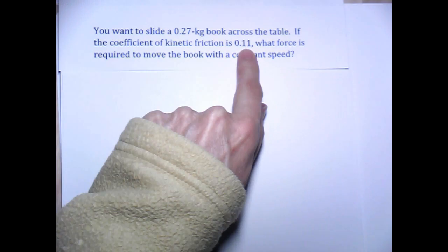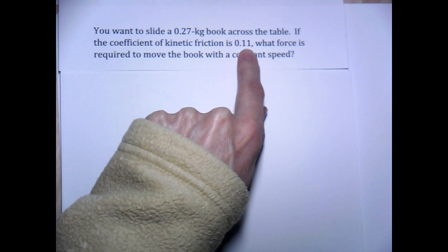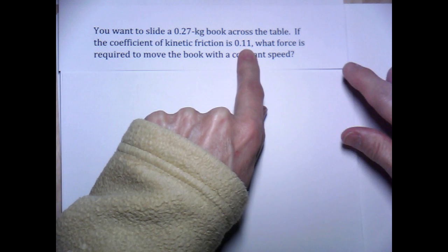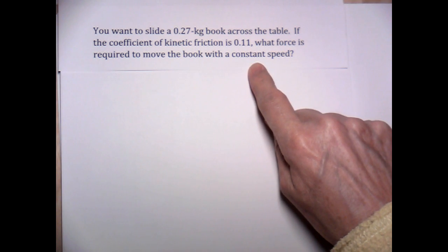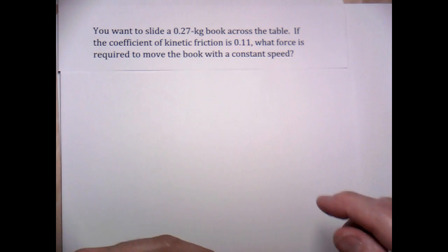Now, there's no units on a coefficient of friction because it's a ratio and the units cancel out. So the first thing we need to do is realize or recognize that constant speed in this problem implies zero acceleration.